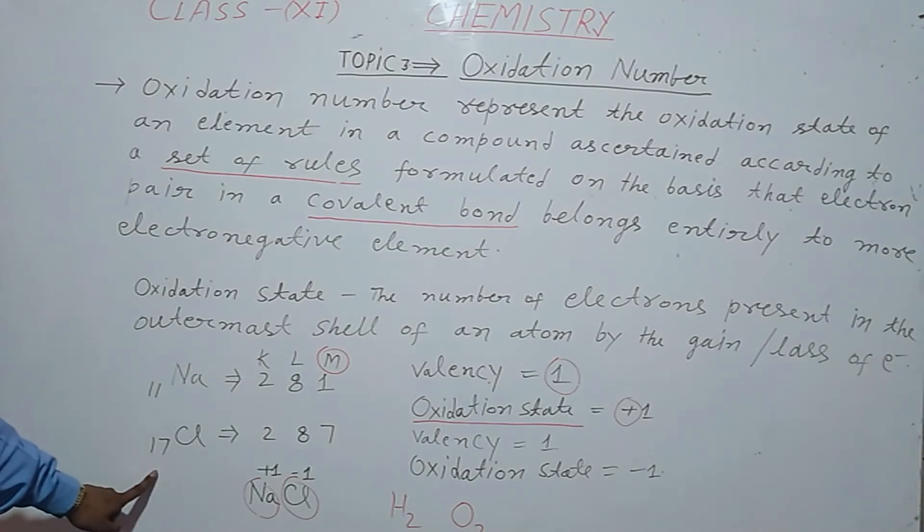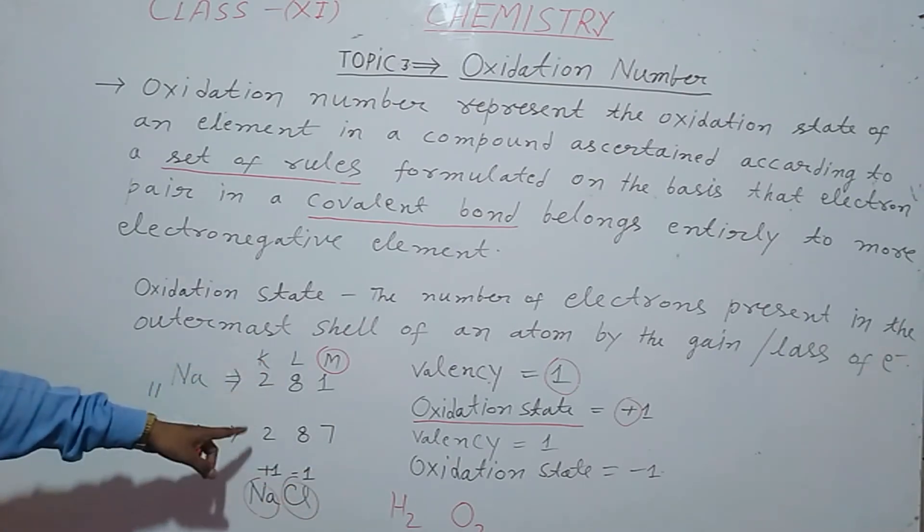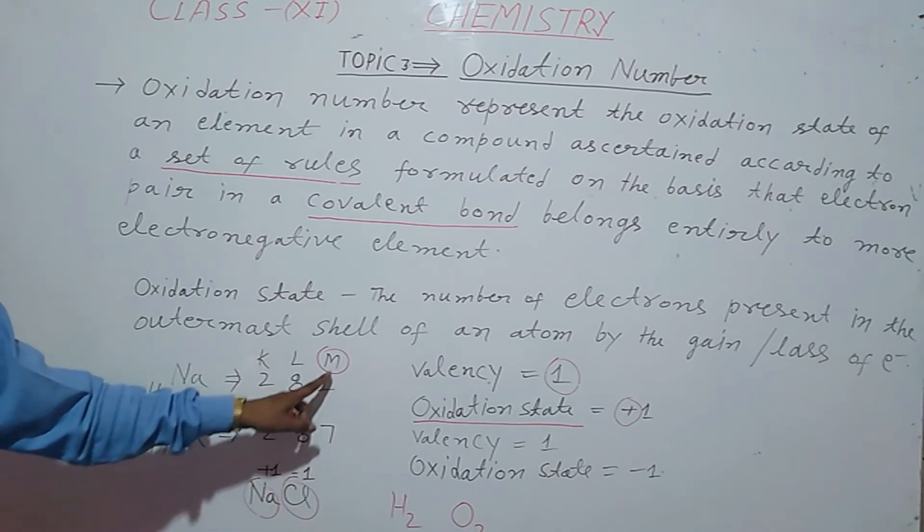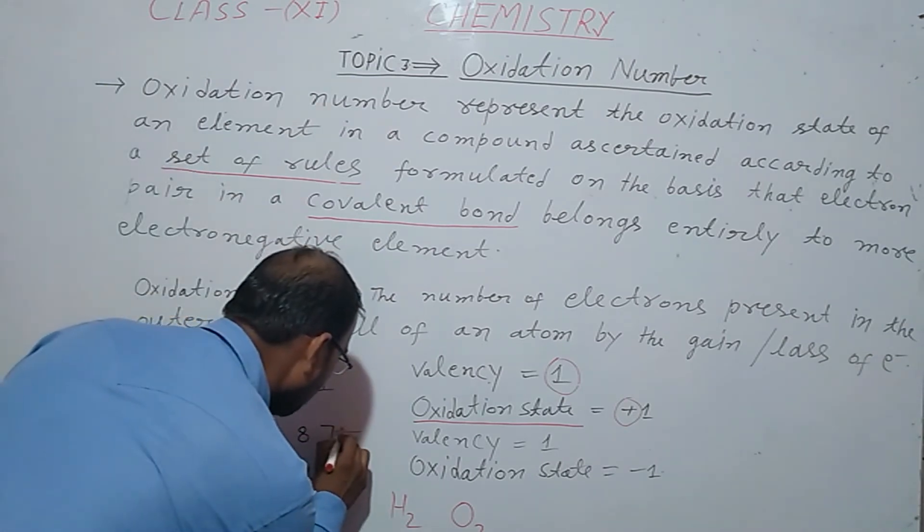Second example is chlorine. Chlorine has electron configuration 2, 8, 7. That is 17 electrons total. In the outermost shell there are 7 electrons. Now we need to complete it with 1 electron.